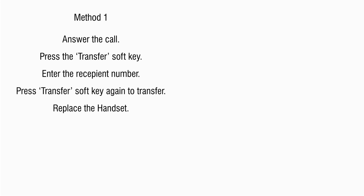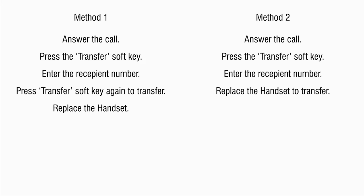Now we will see how to blind transfer a call using Matrix EON 48P. There are two methods. Method one: answer the call, press the transfer soft key, enter the recipient number, press the transfer soft key again to transfer, then replace the handset. Method two: answer the call, press the transfer soft key, enter the recipient number, then replace the handset to transfer.